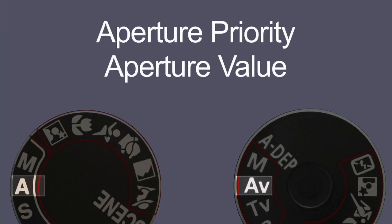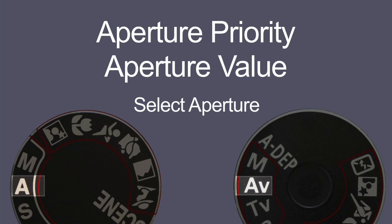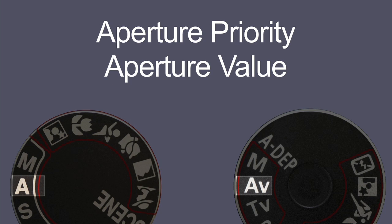Aperture priority mode is my personal favourite and this is the mode that I use the most. In aperture priority mode, the photographer chooses the aperture that he or she wants, usually based on the amount of depth of field that you want in the photograph. One big advantage of aperture priority mode is that your camera has a range of usually 18 different shutter speeds. So by choosing an aperture, you give the camera a significant amount of choice to give you the correct exposure based on the aperture that you've chosen.